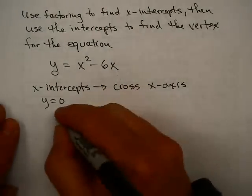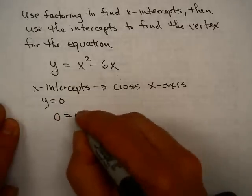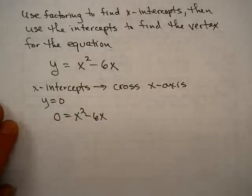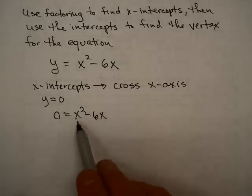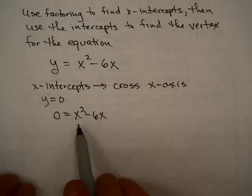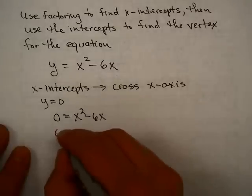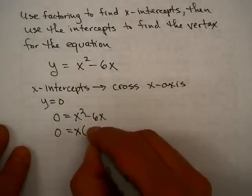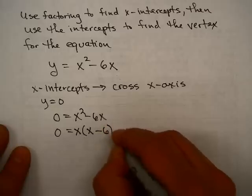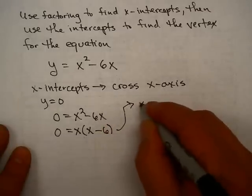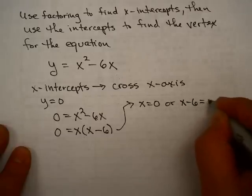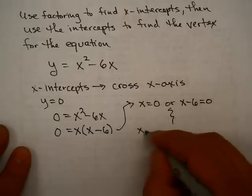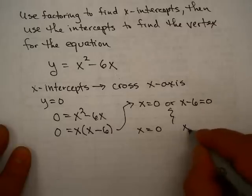I'm going to let 0 equal x-squared minus 6x. You have three different ways to solve a quadratic equation: factoring, completing the square, or the quadratic formula. I'm going to factor out the x and get x times (x minus 6). Using the zero product property, that gives me x equals 0, or x equals 6.